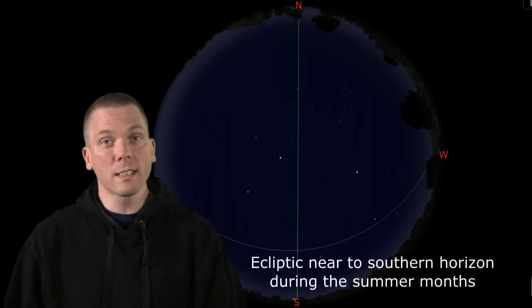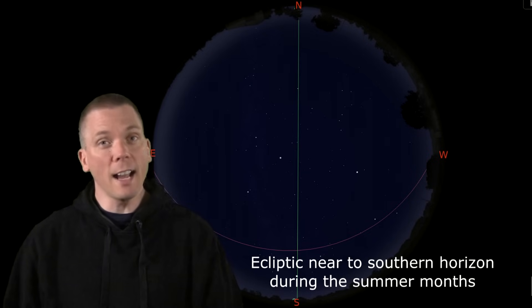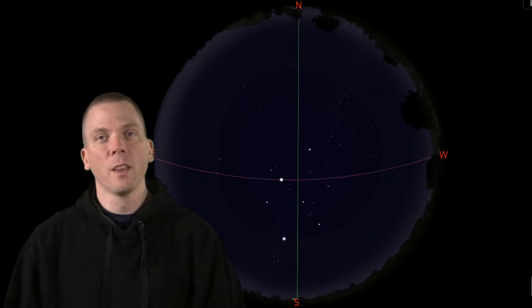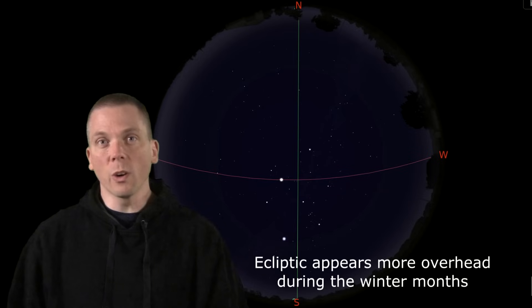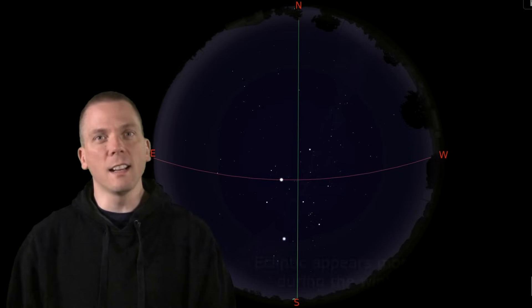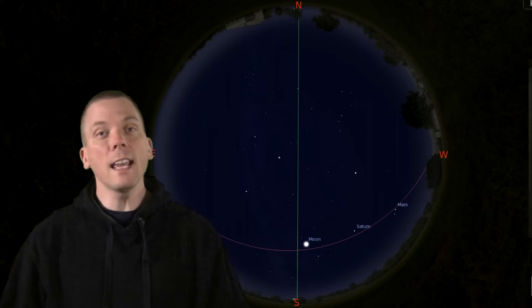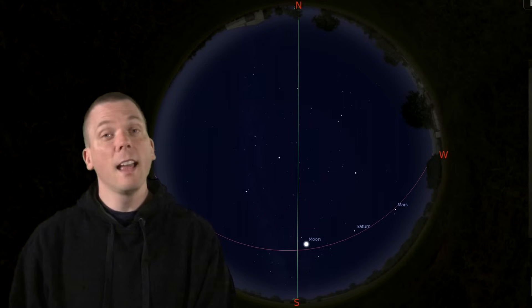This imaginary line appears lower in the sky during the summer, and higher during the winter months at night. So close to, or sometimes right on, the ecliptic is where we will always find the naked eye and telescopic planets in our solar system and the moon.